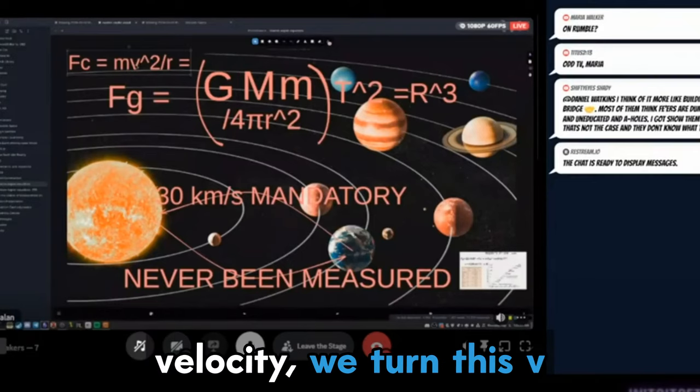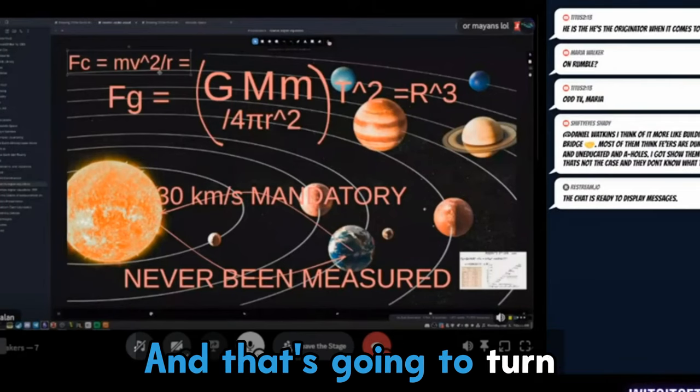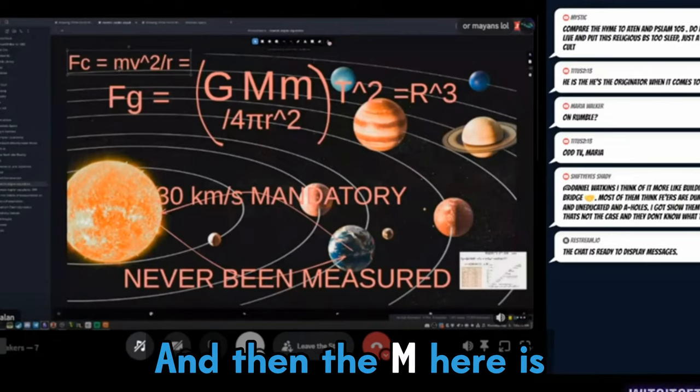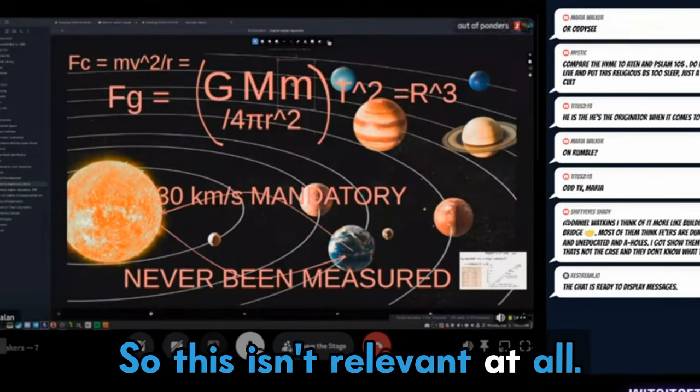So we turn this velocity, we turn this v squared into 4πr. And that's going to turn that into a radius of how fast things are moving in the sky, essentially. And then the m here is going to actually cancel out in the equation. So this isn't relevant at all.